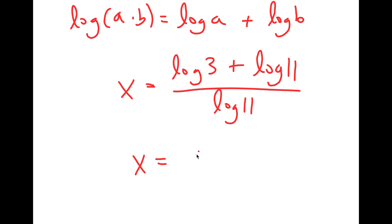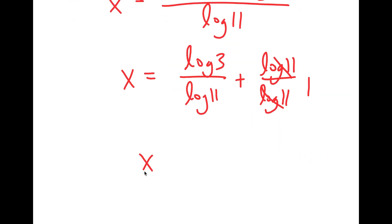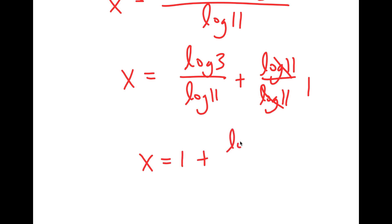And this is the same thing as log 3 over log 11 plus log 11 over log 11, which these two cancel out to get 1. So I have x is equal to 1 plus log 3 over log 11.